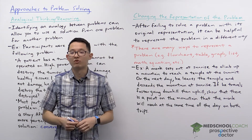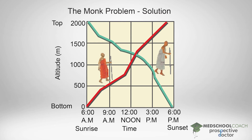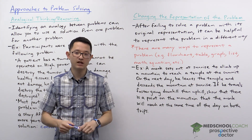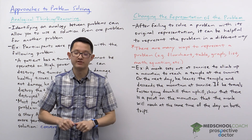It might help to represent the problem using a different approach, and that's exactly what works here. If you represent it as a graph with the time of day on the x-axis and the position on the mountain on the y-axis, you can plot both trips. On the first day the monk goes up slowly, and on the second day he starts at the top and descends faster. You can clearly see on the graph that there is a point where the two lines cross — that is the answer. At that point, the monk will be at the same position at the same time of day on both trips. That's how changing the representation of a problem can help you solve it.